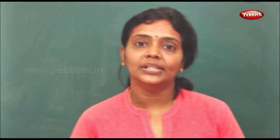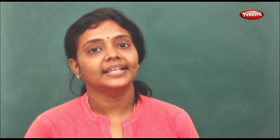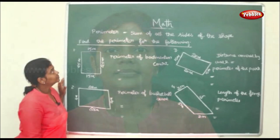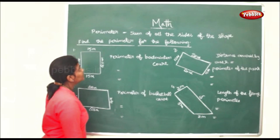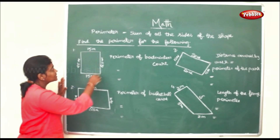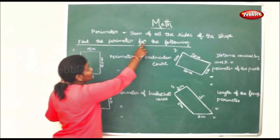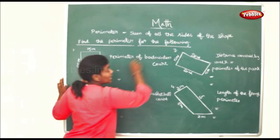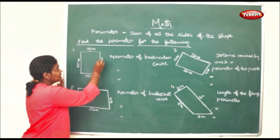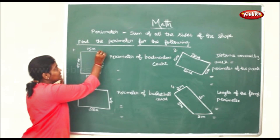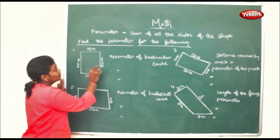Children, the next chapter we're going to learn will be about perimeter and area. First, let us see what perimeter is about. The length of a boundary of any closed figure will be the perimeter. To find the perimeter, we will sum up all the sides — perimeter is equal to the sum of all the sides of the shape.